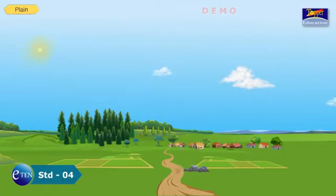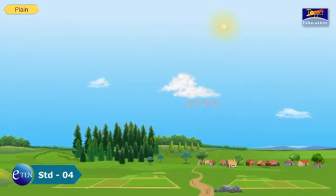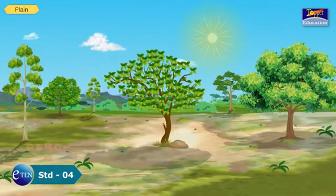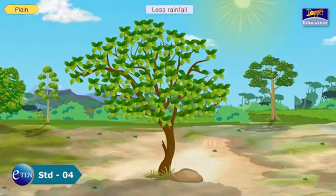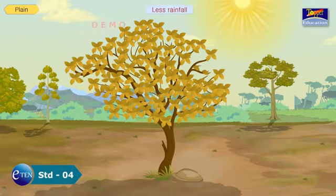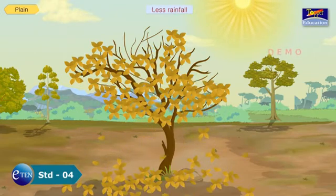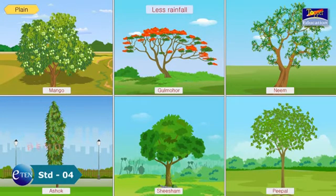Plants growing in plains can be grouped into two categories. In areas of less rainfall, trees have lots of leaves and branches. Many of these trees can survive in very hot climates and may shed most of their leaves in autumn to prevent the loss of water from the plant. They can bear the heat of summers. Mango, Gulmohar, Neem, Peepal, Shisham, Ashok, and Eucalyptus are common trees in these types of areas.